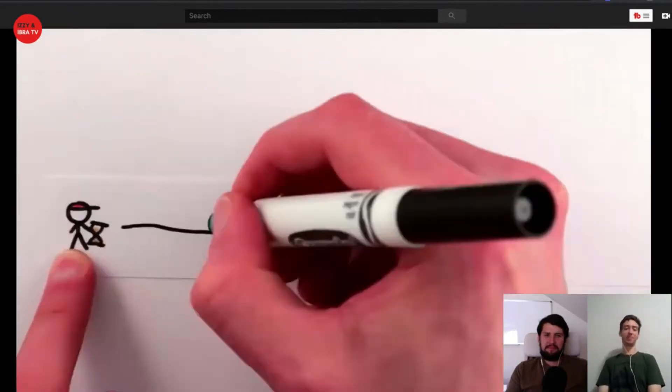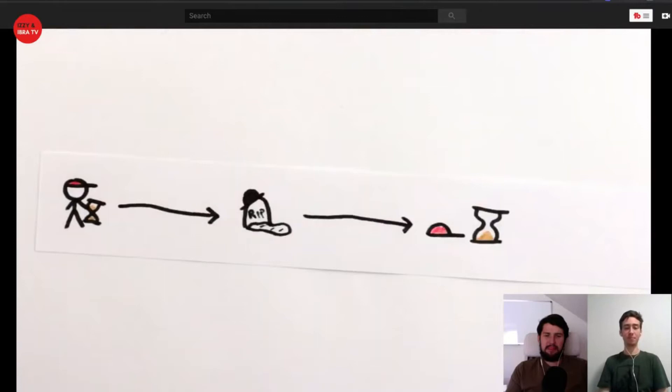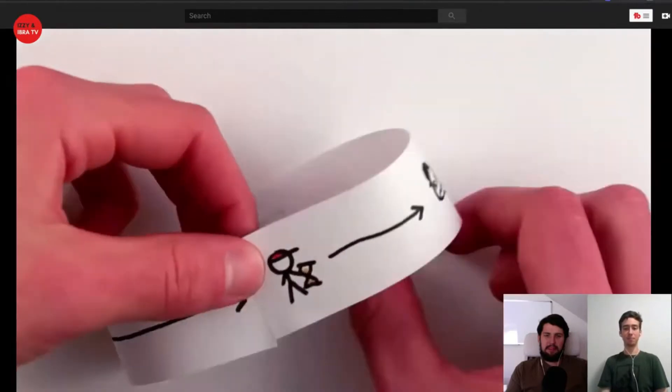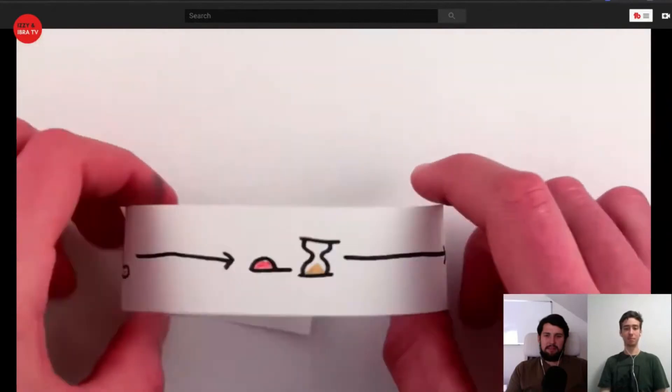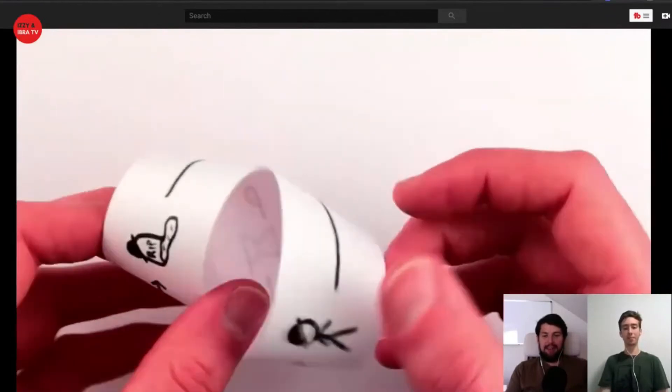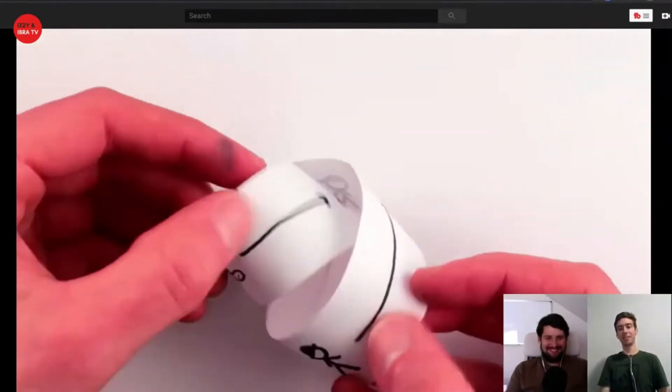You go back in time, kill your grandfather. Thus you aren't born, so you can't go back in time. Thus your grandfather isn't killed. Thus you are born, so you go back in time and kill your grandfather, and so on. I'm showing this as a linear series of events, but really it's two entangled histories in parallel.